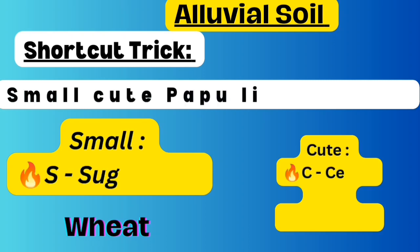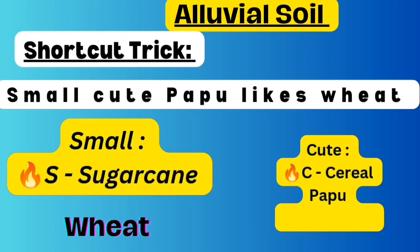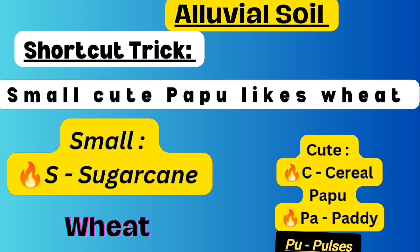Next sentence: 'SMALL CUTE PAPPU LIKES WHEAT.' S stands for sugarcane, C stands for cereal, P stands for paddy, PU stands for pulses, and WHEAT represents wheat. So alluvial soil is ideal for the growth of sugarcane, wheat, cereal, pulses, and paddy.